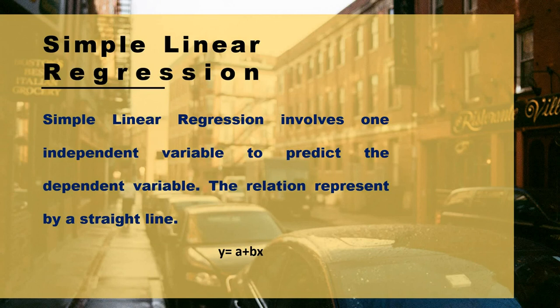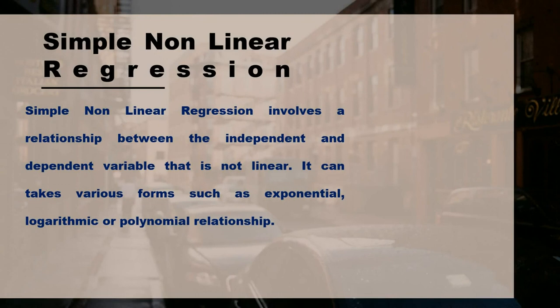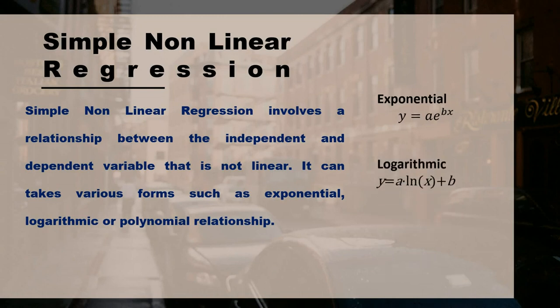Simple non-linear regression involves a relationship between the independent variable and the dependent variable that is not linear. It can take various forms such as exponential, logarithmic, or polynomial relationships. These are the equations for exponential, logarithmic, and polynomial relationships.